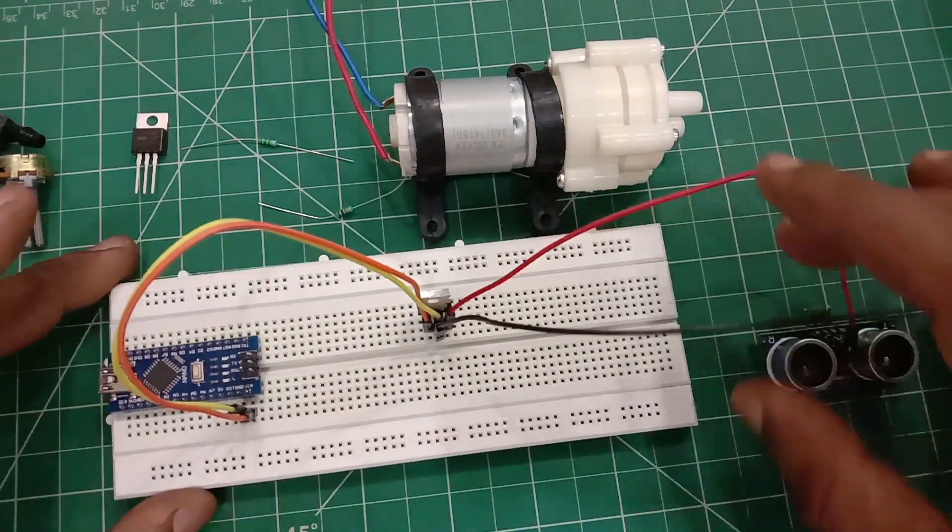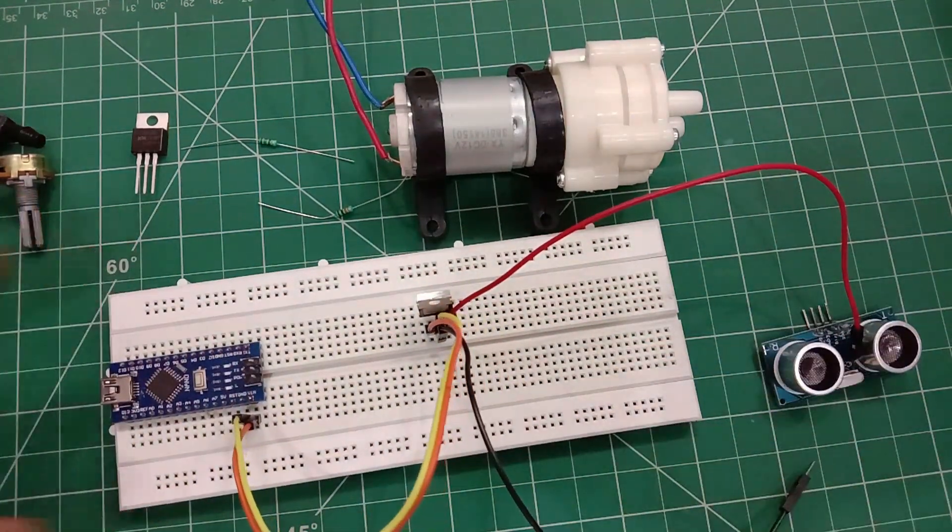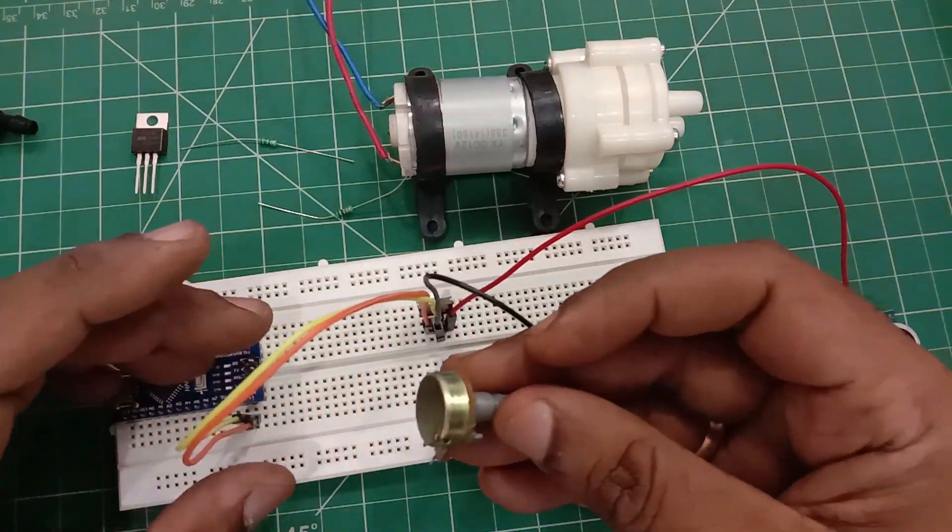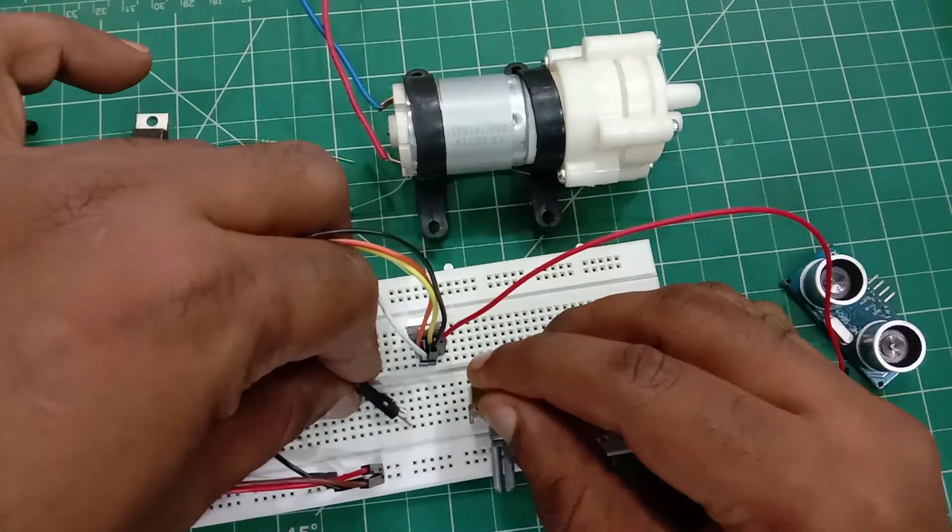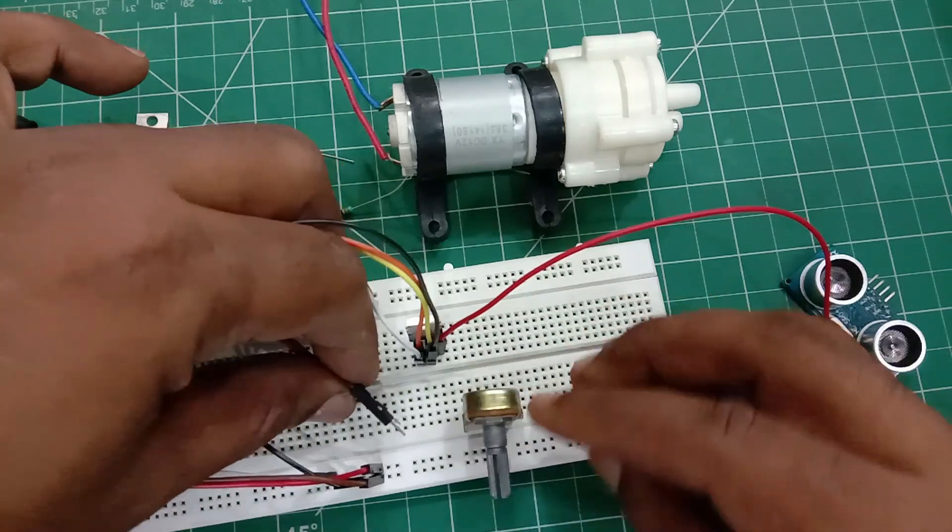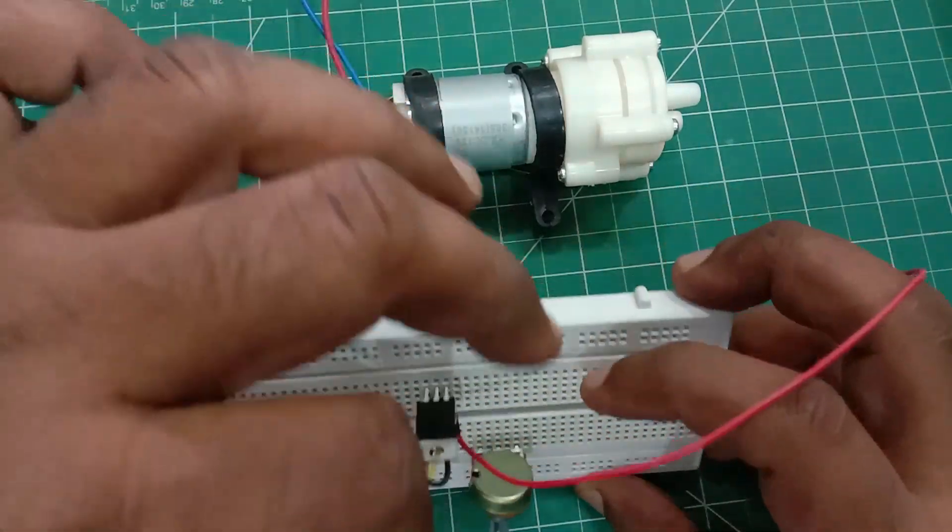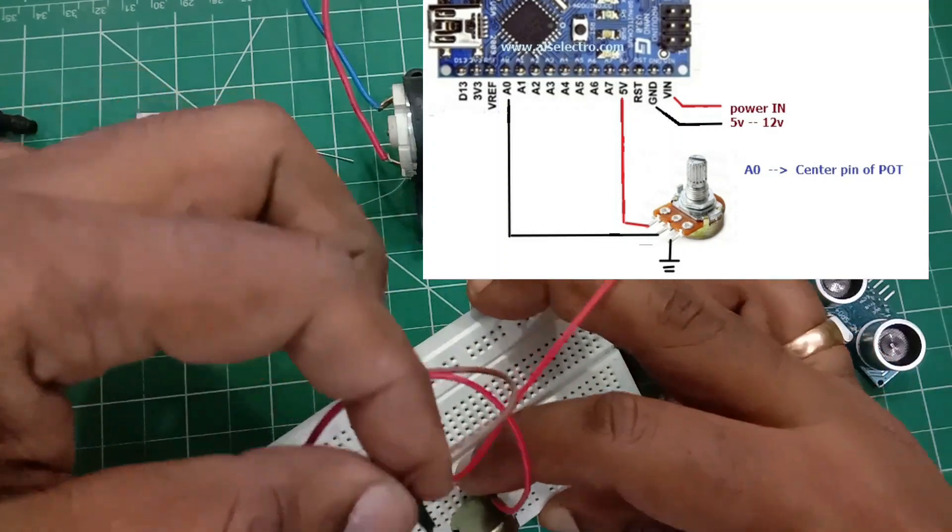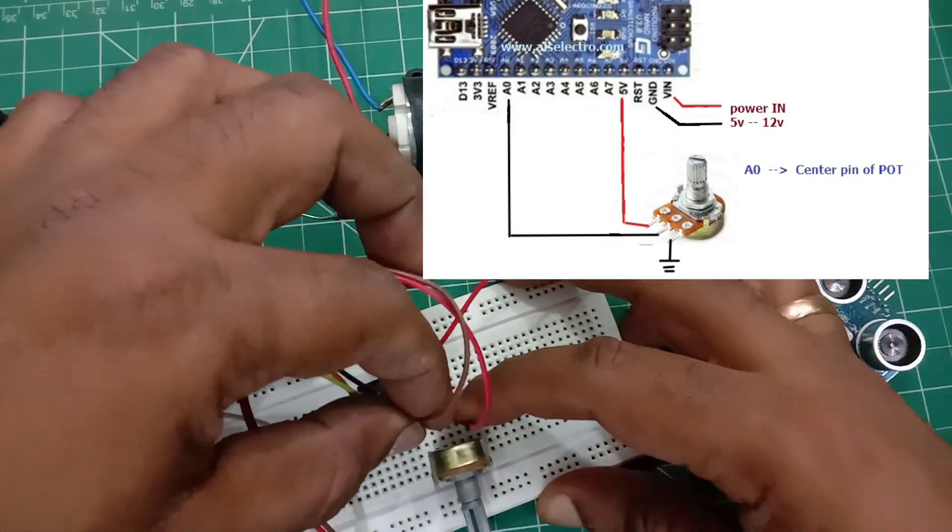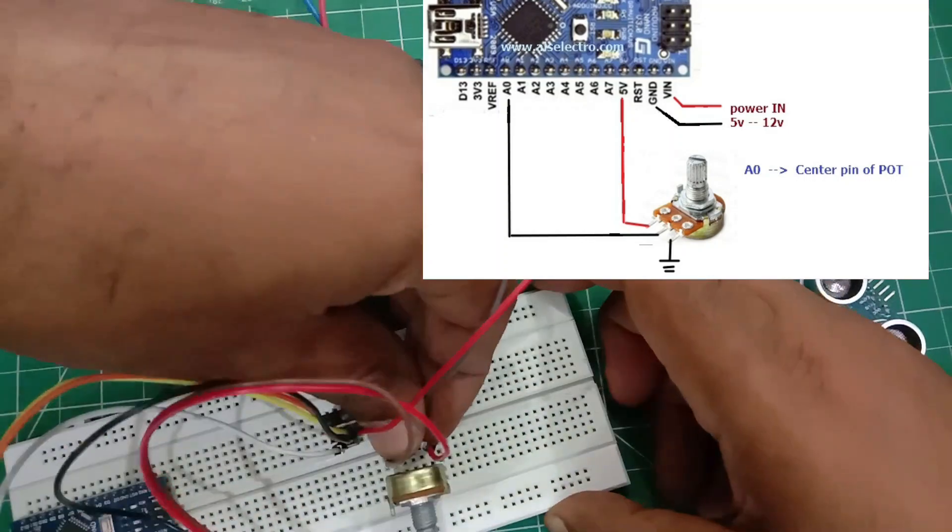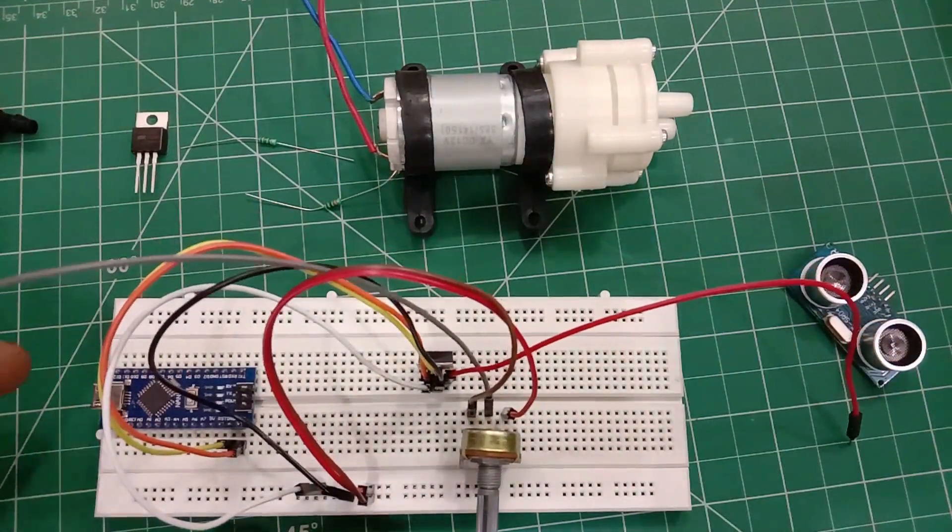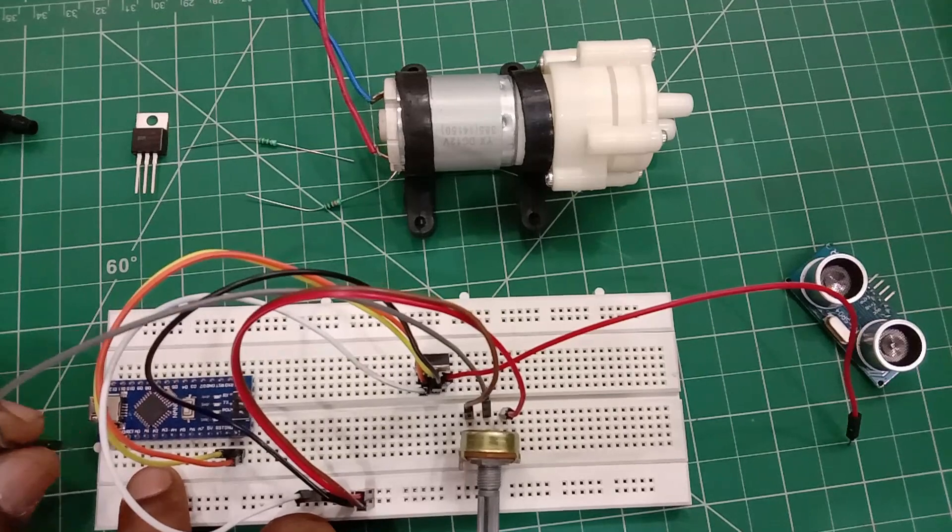The potentiometer used here is 100k which is used to set the on time of the motor. The potentiometer has got three pins: first pin is connected to 5 volt, the third pin is connected to ground, and the center pin that is the sensing pin is connected to A0, that is analog in A0 of Arduino Nano. This is to set the on time of the motor.